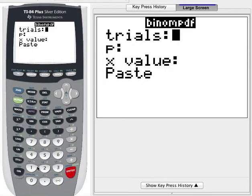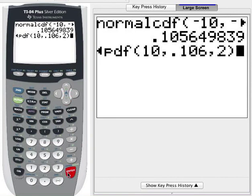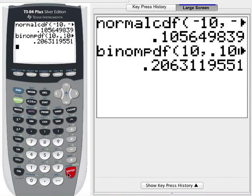Here is the binomial pdf command. There are a total of 10 trials. The success probability we found is 0.106. And I'm interested in exactly two successes. 0.206.